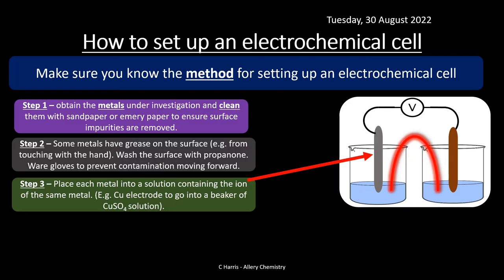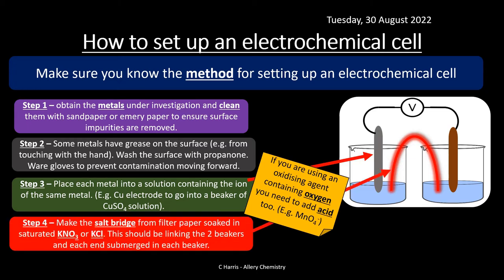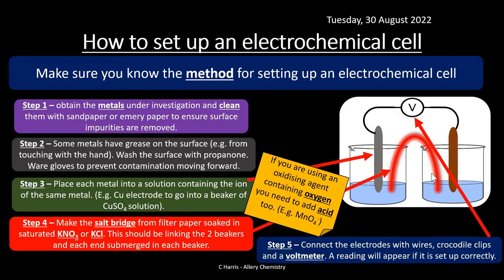For example, if using a copper electrode, use copper sulfate solution, which provides Cu²⁺ ions corresponding to the copper electrode. If using an oxidizing agent containing oxygen — such as potassium permanganate — you'll need to dissolve it in acid as well. Step four: add a salt bridge, which is typically a piece of filter paper soaked in saturated potassium nitrate or potassium chloride solution, linking the two beakers together.